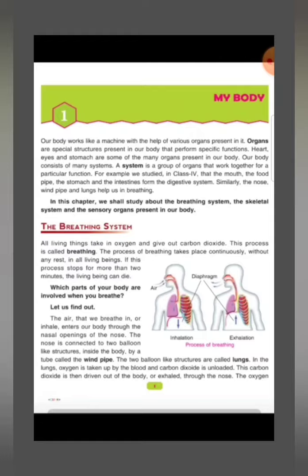The two balloon-like structures are called lungs. In the lungs, oxygen is taken up by the blood and carbon dioxide is unloaded. The oxygen we took in through the nose travels through the wind pipe and reaches the lungs, where blood takes up the oxygen. The carbon dioxide is then driven out of the body and exhaled through the nose.